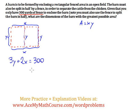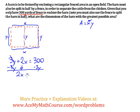What I'm going to do now is isolate x so I can plug it into the area equation and get an area with just y instead of x as well — I don't want two variables. So 2x equals negative 3y plus 300. Dividing both sides by 2, x equals negative 1.5y plus 150.